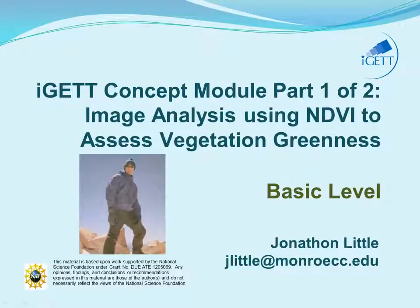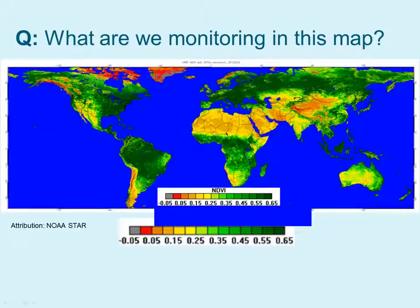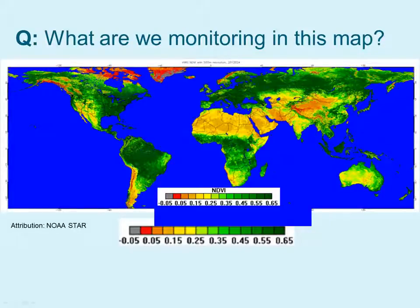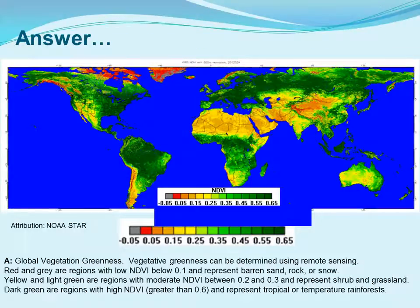In this concept module we'll be using image analysis and NDVI to assess vegetation greenness. On this global map you can see dark green colors which have an NDVI value greater than 0.5, and red values with a very low, near-zero NDVI. Looking at the tropical regions there's bright green, and in the Tropic of Cancer in northern Africa you can see some yellow. So we are taking a look at global vegetation greenness.